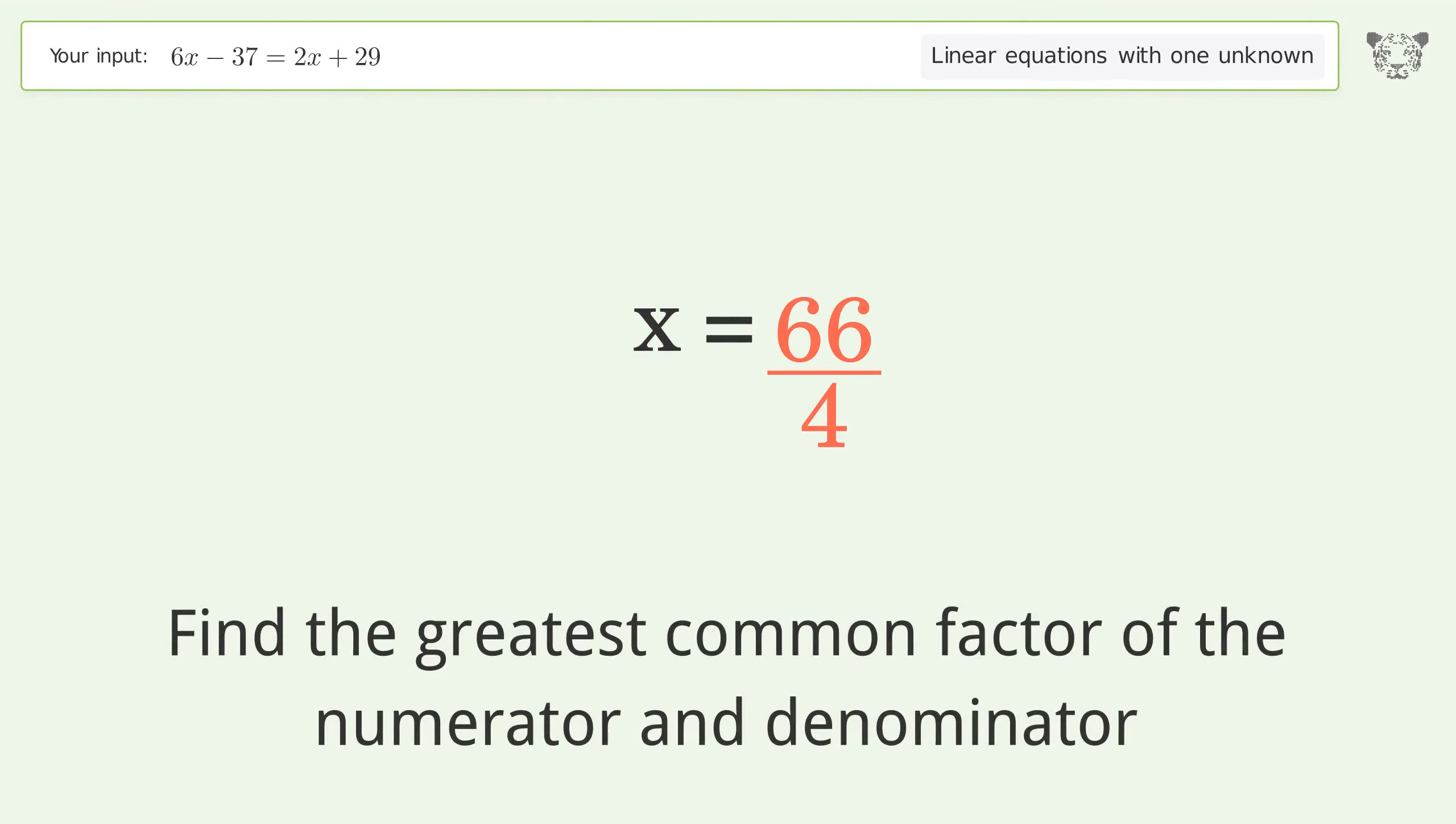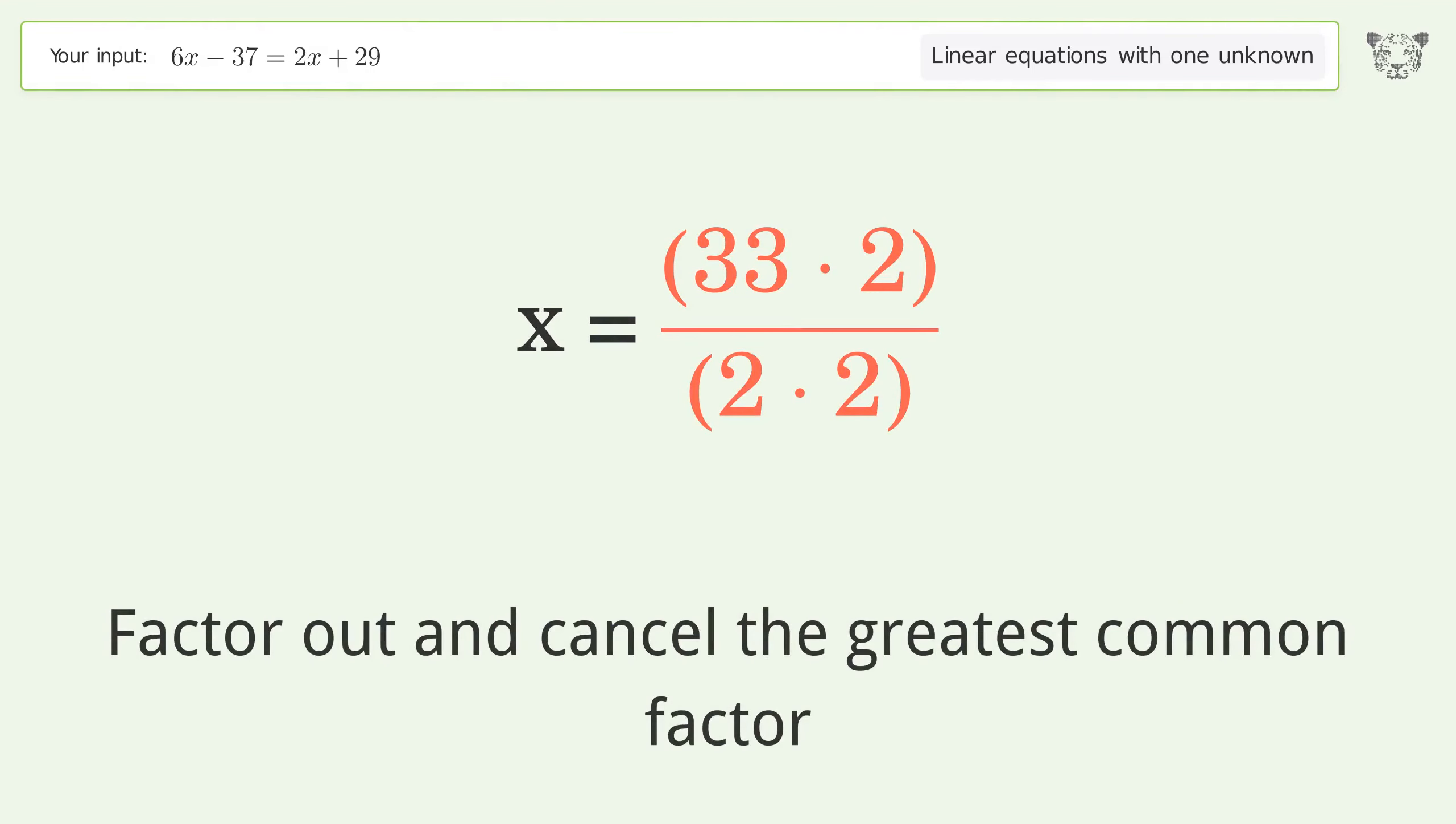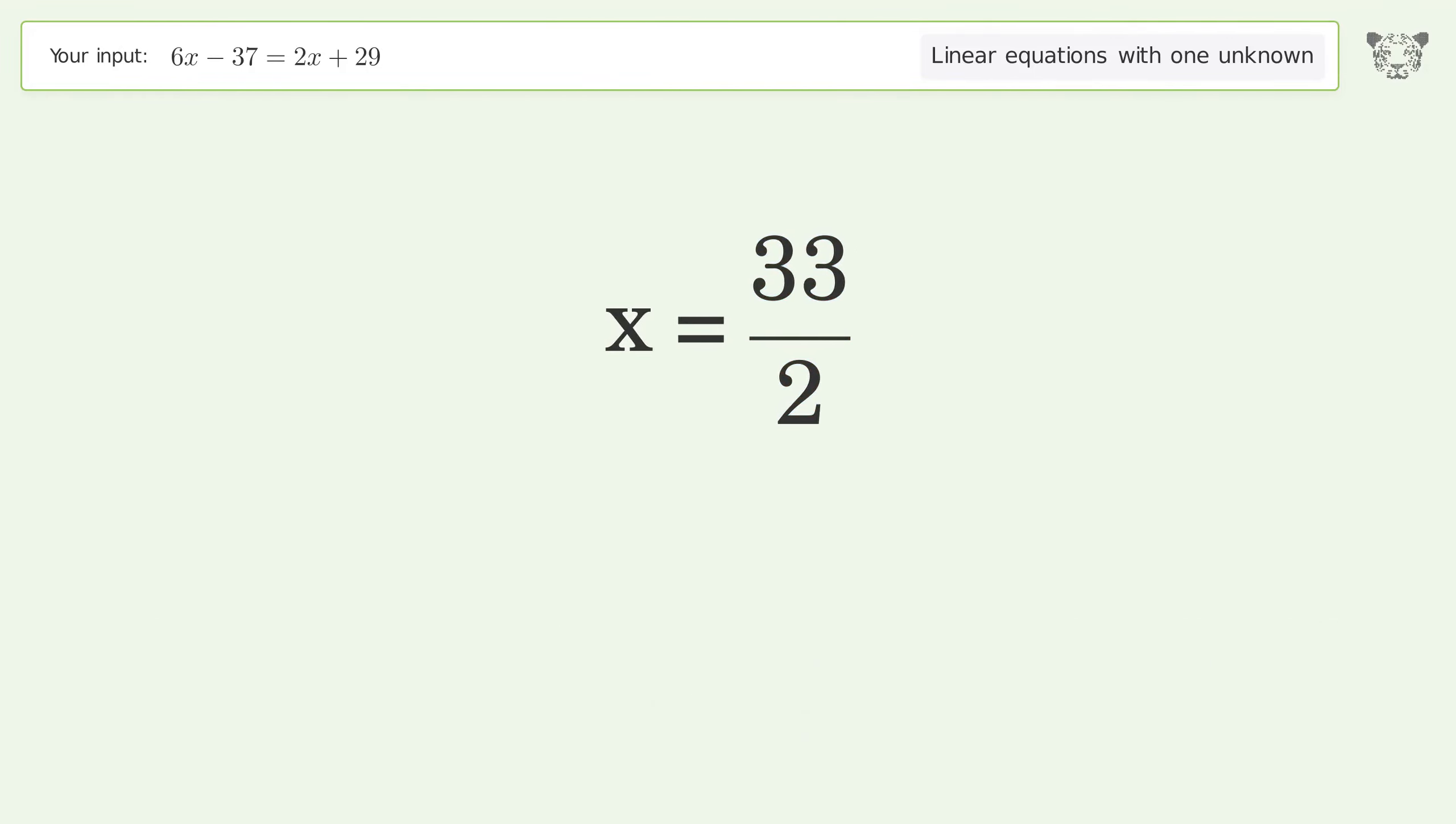Find the greatest common factor of the numerator and denominator. Factor out and cancel the greatest common factor. And so the final result is x equals 33 over 2.